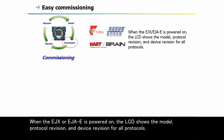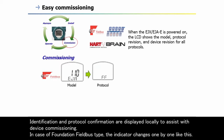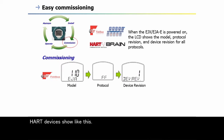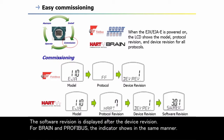When the EJX or EJAE is powered on, the LCD shows the model, protocol revision, and device revision for all protocols. Identification and protocol confirmation are displayed locally to assist with device commissioning. For Foundation Fieldbus type, the indicator changes one by one. HART devices display either 5 or 7 as the HART protocol revision, followed by a device revision number. The software revision is displayed after the device revision. For BRAIN and PROFIBUS, the indicator shows in the same manner.